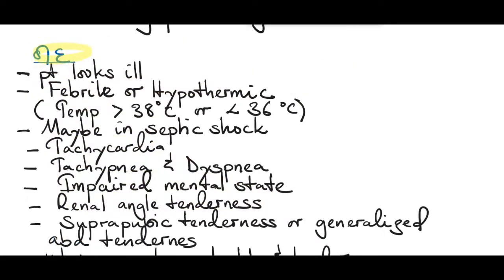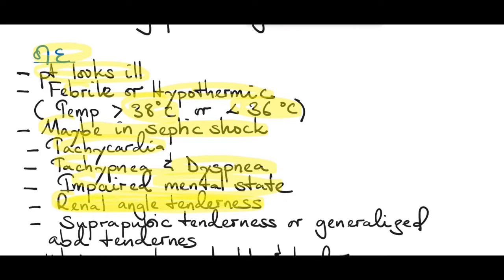When you examine the patient, the patient will look ill, febrile or hypothermic to touch — temperature over 38°C or less than 36°C. The patient might be in septic shock due to overwhelming sepsis. Features of septic shock include tachycardia, tachypnea and dyspnea, impaired mental state, and renal angle tenderness, which indicates the infection has spread to the kidneys, meaning pyelonephritis.